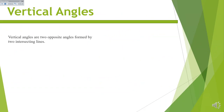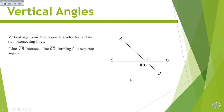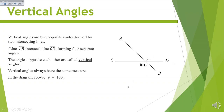We're going to start with vertical angles. Vertical angles are two opposite angles formed by two intersecting lines. You have line AB and line CD intersecting at a point, and these two angles that are created would be equal. Actually there are four angles, because these two angles would also be equal to each other. They're called vertical angles and vertical angles are always going to have the same measure.